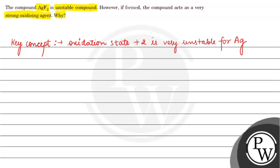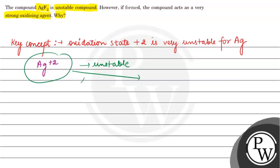When Ag is in the +2 state, it is very unstable. So, it has a tendency to gain one electron, moving from the +2 state to the +1 state.